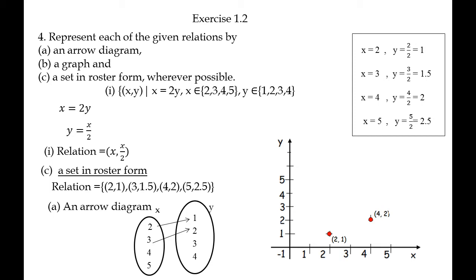Next, graph. In the graph, X axis represents domain, Y axis represents codomain. For (2,1), x is 2, y is 1, plot it. For (4,2), x is 4, y is 2, plot it. This is the graph.